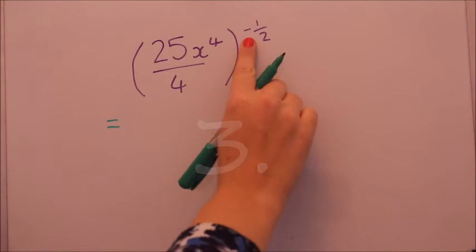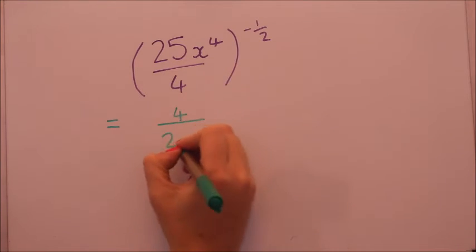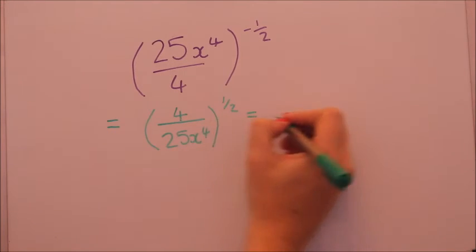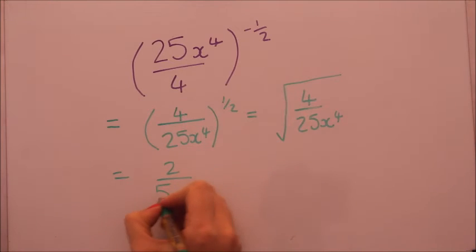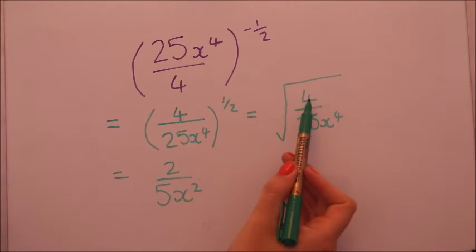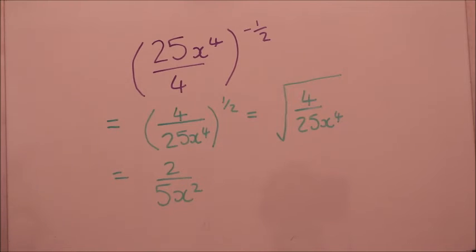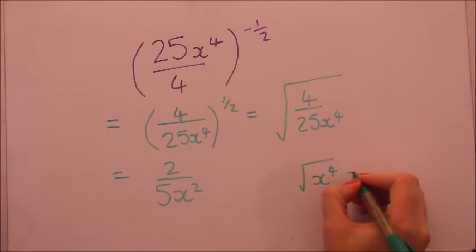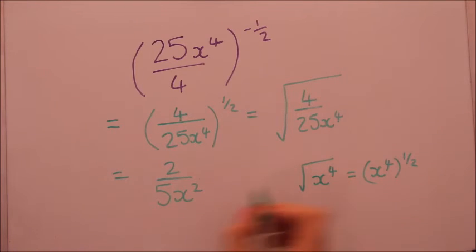Okay the first thing I'm going to do this one is flip the whole thing because there's a negative in the power. Okay so I've square rooted everything here. I hope you're happy that x to the four when you square root that is x squared. Square rooting will just half the power. And the reason for that is if you're square rooting, then remember that's the same as saying it's the power of a half. So four times a half is two.